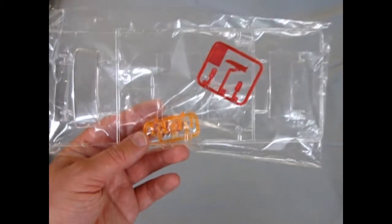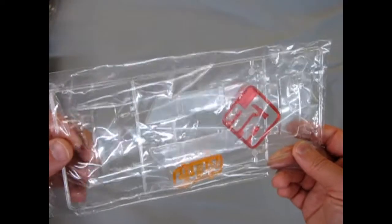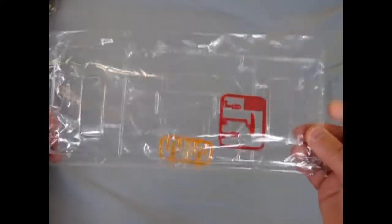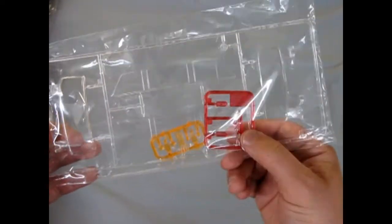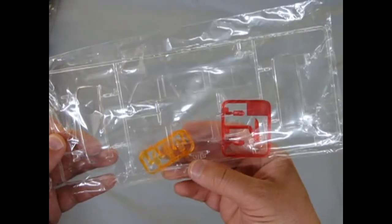Then of course, getting back to our glass again. I'm going to keep this in the bag just to keep them from scratching. But you do get red tail lights, a red hood emblem, and amber turn signals as well as the clear windows.